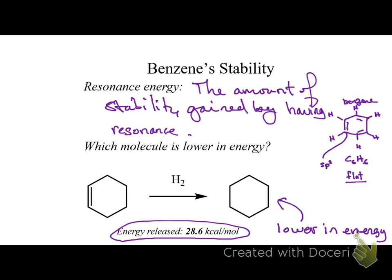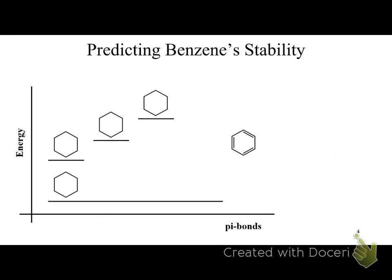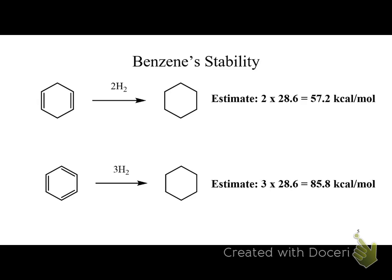We've added two hydrogens, which is called the heat of hydrogenation because you're hydrogenating the molecule. That gives us 28.6 kcal per mole for the stability from one double bond.